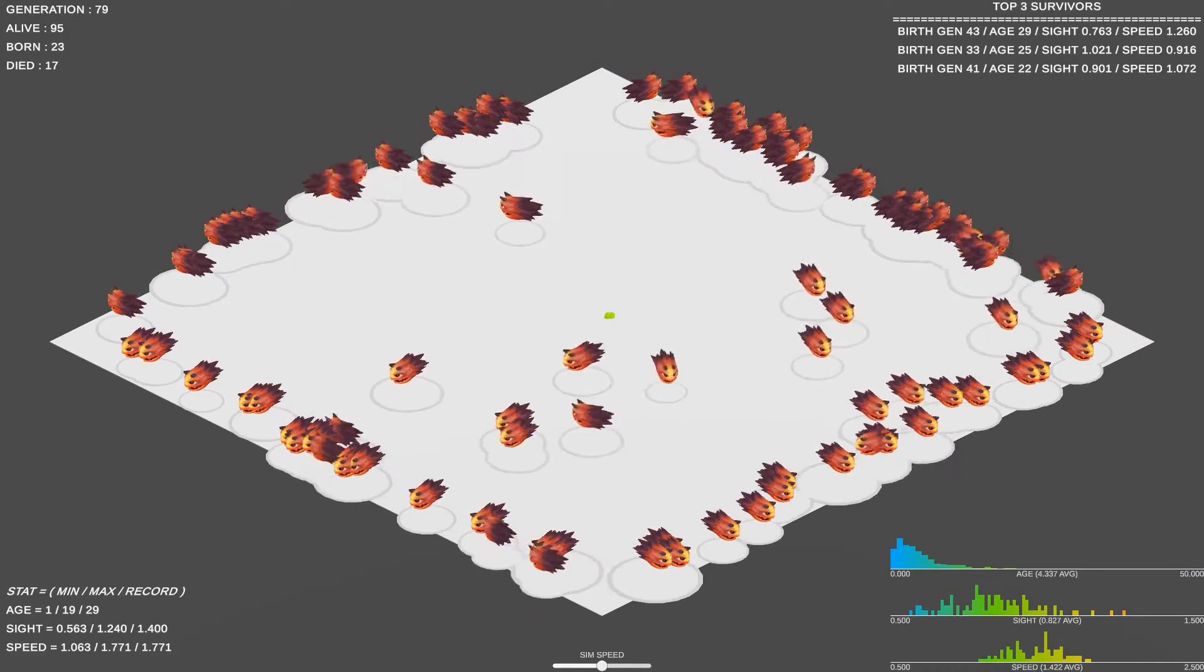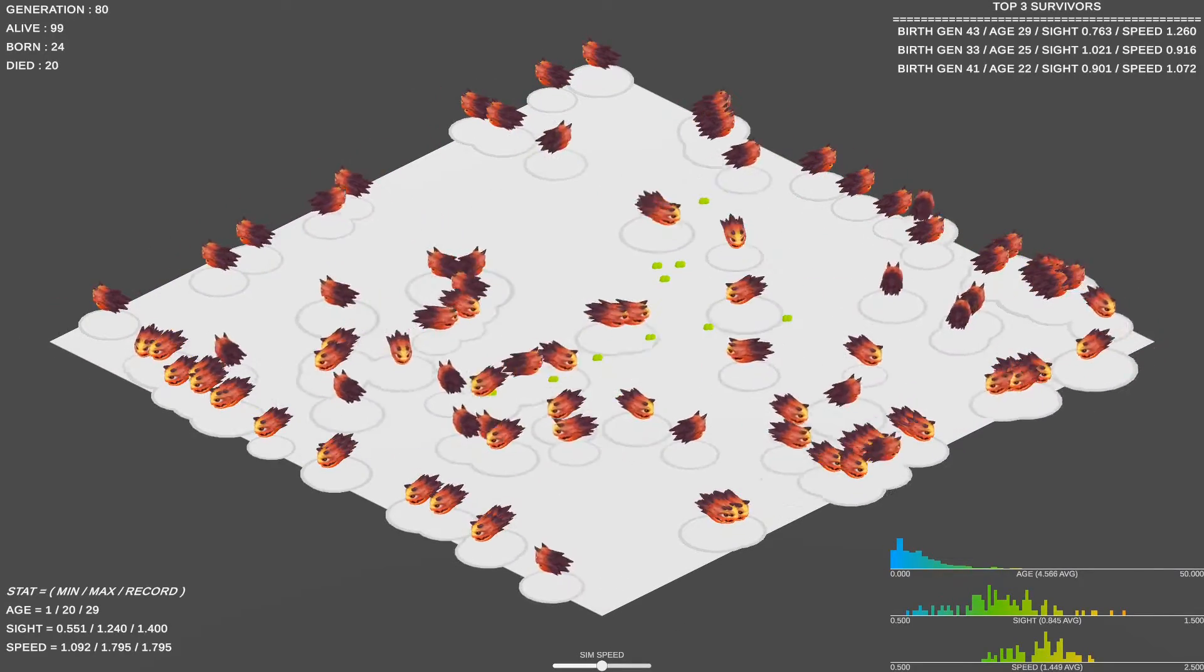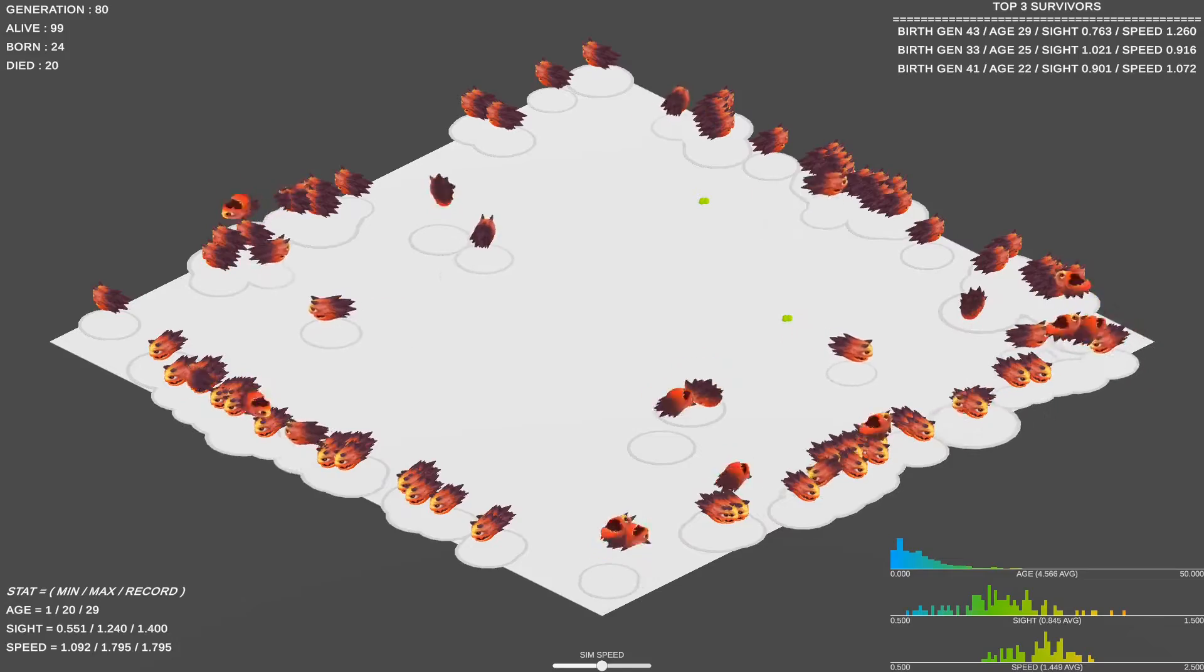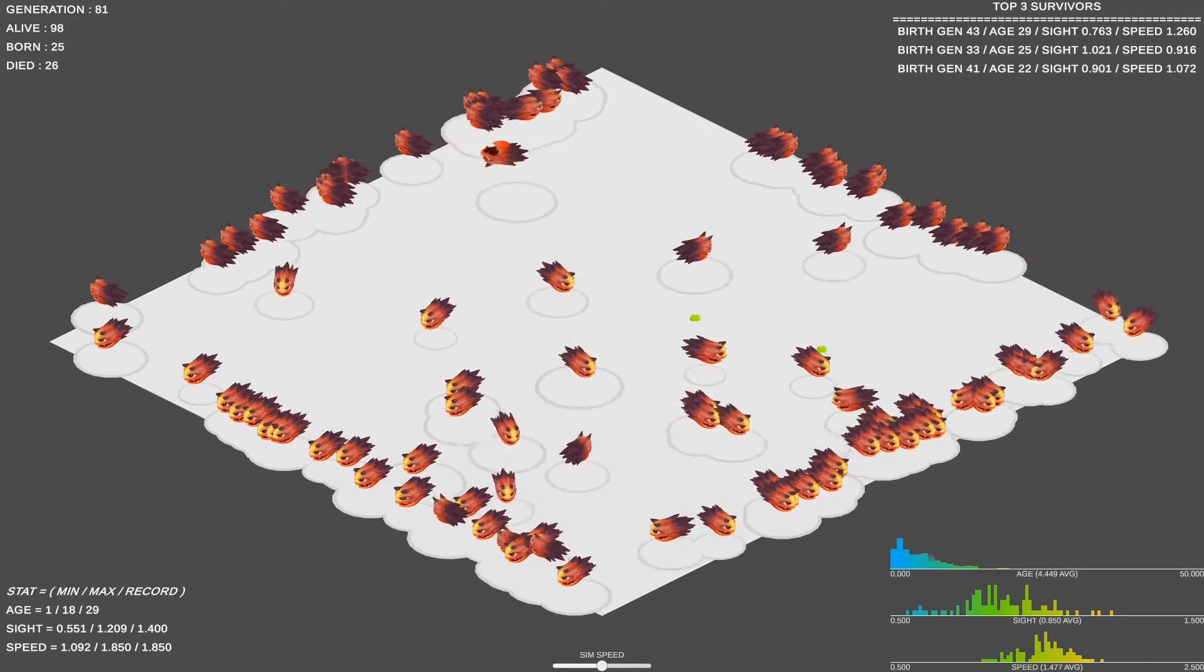We will cover the implementation of natural selection in Unity where we will discover how a handful of traits can evolve drastically different and how they react to environment changes, allowing our simple AI to adapt best to survive our game world.